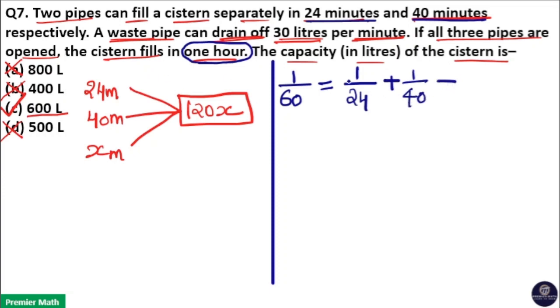Now, the third pipe is emptying the tank, so negative. And we don't know the value, so 1 by T3. Now, 1 by T3 is 1 by 24 plus 1 by 40 minus 1 by 60.